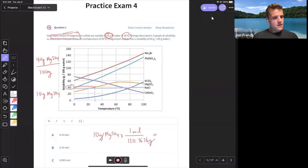Grams cancel out. And 10 divided by 120.3676, I get about 0.083 moles of magnesium sulfate. So choice C there for question one.